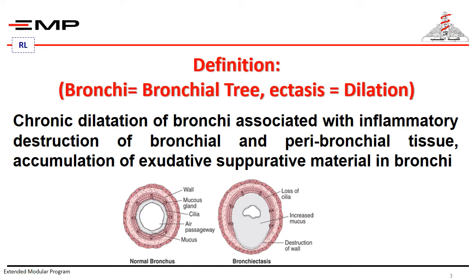What is bronchiectasis? From its name, bronchi means bronchial tree, ectasis means dilatation. So it is chronic dilatation of the bronchi associated with inflammatory destruction of the bronchial and peribronchial tissue, with accumulation of suppurative material in the bronchi. So it is a suppurative lung disease.